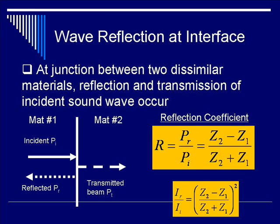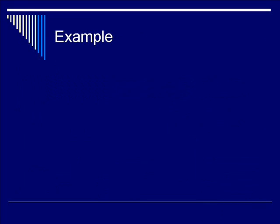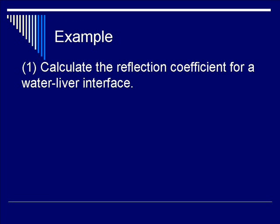Let's do an example to find out what R is for different materials. As an example, let's look at the water-liver interface and calculate the reflection coefficient R. This water-liver interface could be, a real-life example could be a person who has ascites. You have water in front of the liver. In this case, Z1 would be defined as water, and Z2 would be the liver.